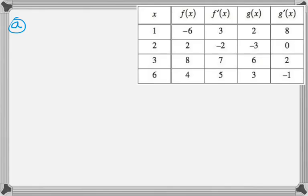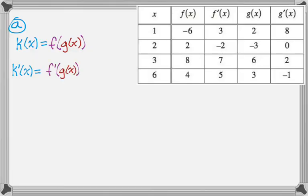We're just asked to do three things that you could probably do. Two of them you could probably do within almost the first month of calculus. So k of x is equal to f of g of x, and we want the tangent line at x equals 3, so we're going to need k prime of x. So k prime of x is f prime of g of x times g prime of x by the chain rule.